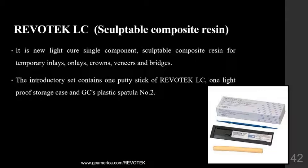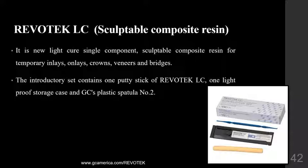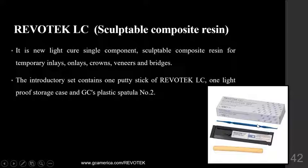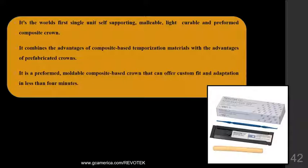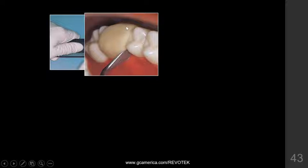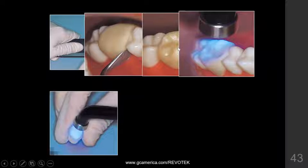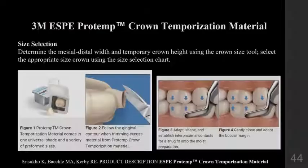Revotec LC is a sculptable composite resin — a new light-cure, single-component sculptable composite which can be used for inlays, onlays, veneers, and bridges. It combines the advantages of composite-based temporization material with the advantages of prefabricated crowns. It consists of preformed, mouldable composite-based crowns that can offer custom fit and adaptation in less than four minutes. The material is adapted to the prepared tooth surface, contoured accordingly, and light-cured. Once completely set, it is trimmed, polished, and cemented with temporary cement.